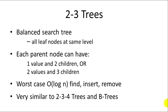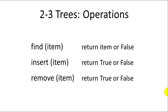They're very similar to 2-3-4 trees and B trees, if you're familiar with either of those. The operations we want to have for 2-3 trees are: find an item, which will either return the item if found or false if not; insert an item, which will return true if successfully inserted or false if not; and remove an item, which will return true if successfully removed or false if the item was not found. In this video we'll cover find and insert.